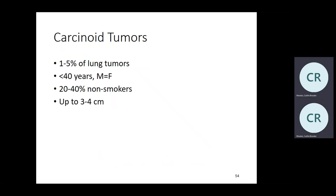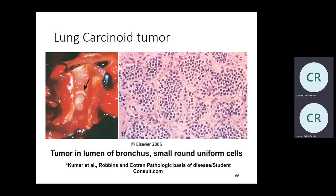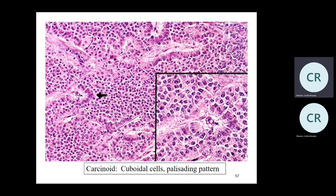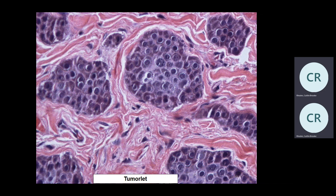Carcinoid tumors are usually in nonsmokers and younger patients. Organoid pattern: nests of small, round, uniform cells with moderate cytoplasm. Typical carcinoid: less than 2 mitoses per 10 HPF, no necrosis. Atypical carcinoid: 2 to 10 mitoses per 10 HPF with some necrosis. This is an example of a tumorlet — about two millimeters in size, less than five millimeters — benign, sometimes found incidentally with no significant clinical outcome.